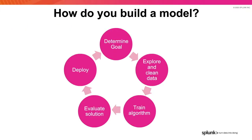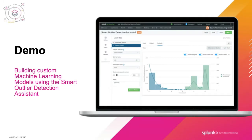Thanks, Jessica. Before I show you the demo, I want to take a moment to provide a high-level overview of how to build a model. Generally, you follow a scientific methodology, determining your business goal, and then scoping and exploring the relevant data needed to solve that business case. Training algorithms and evaluating the solution are about 20% of the workload that a data scientist normally would perform. With the machine learning toolkit, we simplify this process and allow them to not only train the algorithm and evaluate the solution, but to operationalize and deploy that model against their business objectives. I'm going to open Splunk Enterprise to demonstrate the security use case first, followed by an IT use case, leveraging the Smart Outlier Detection Assistant in the MLTK.